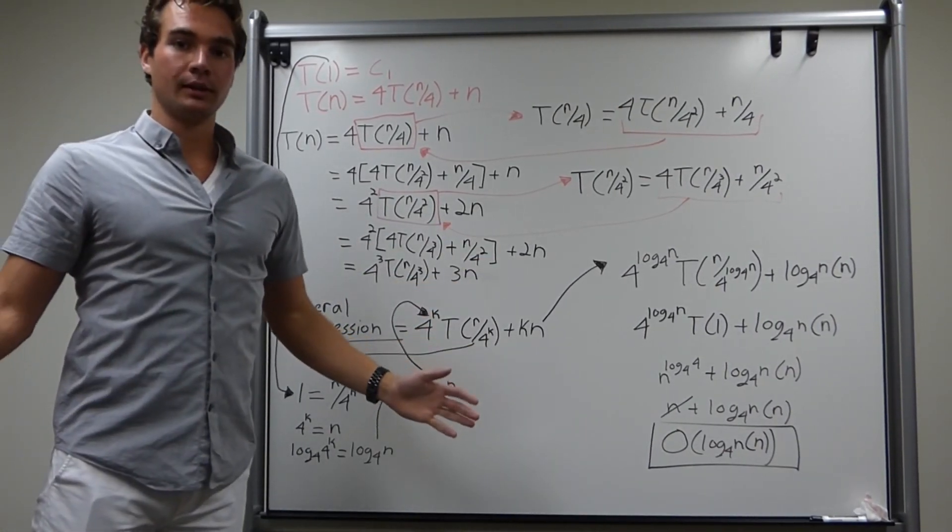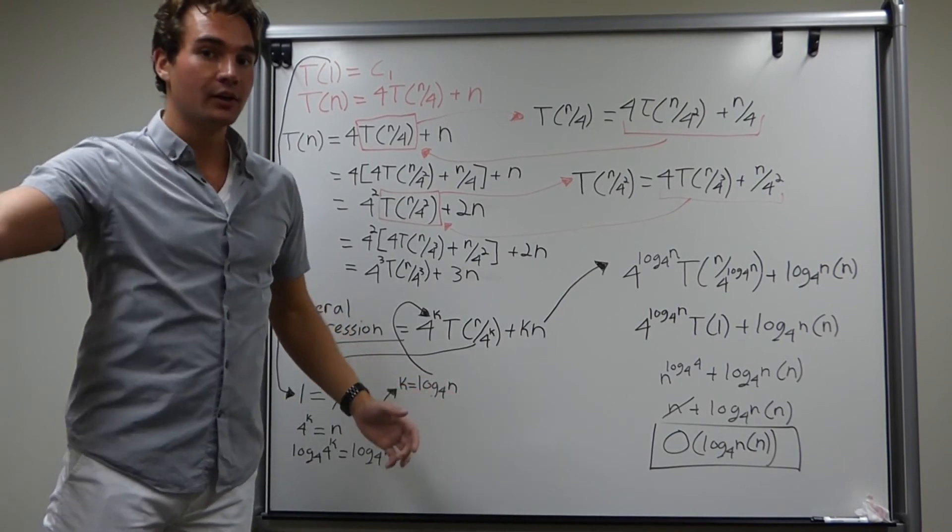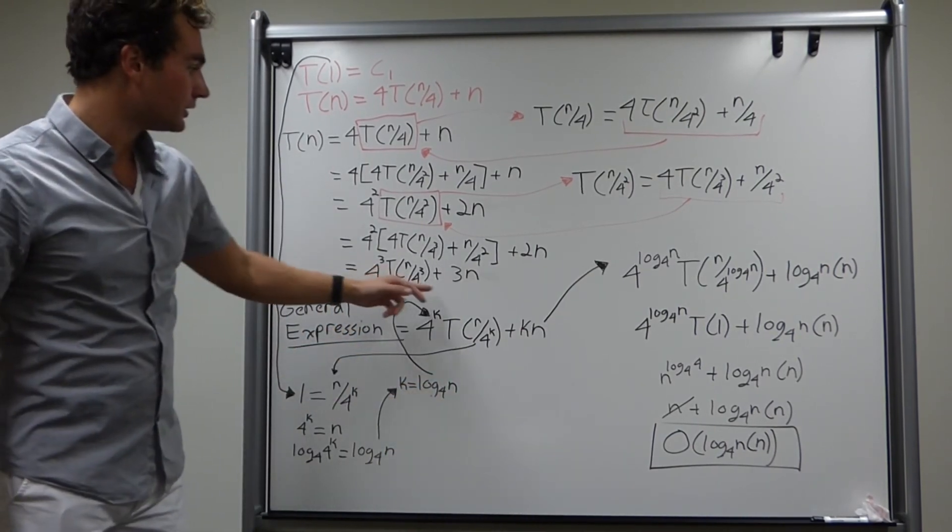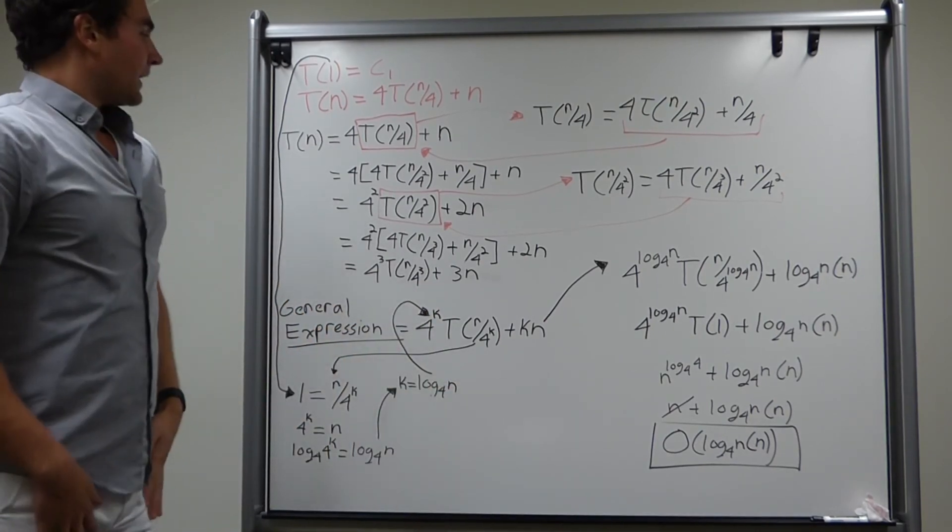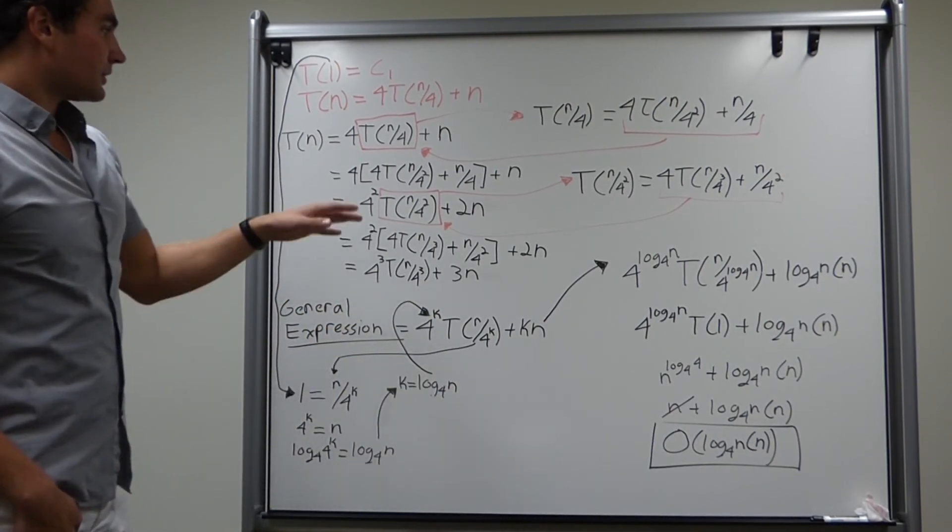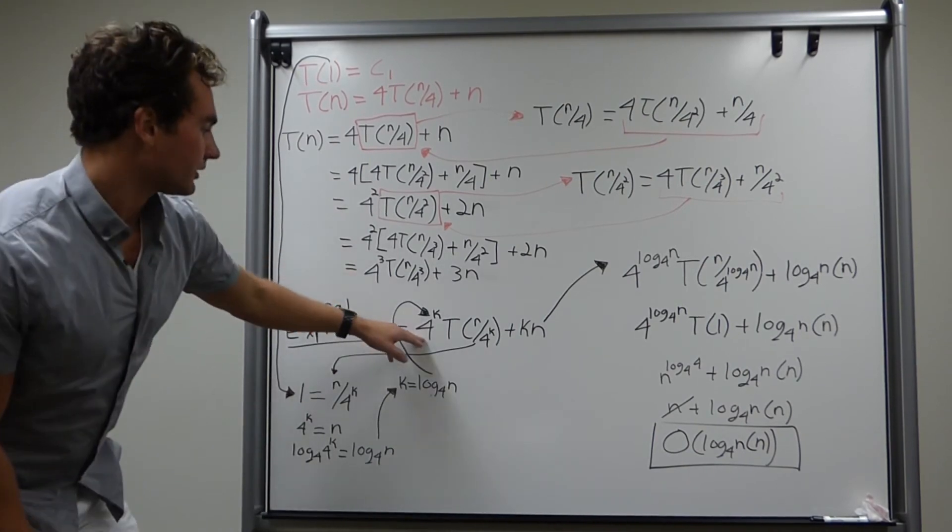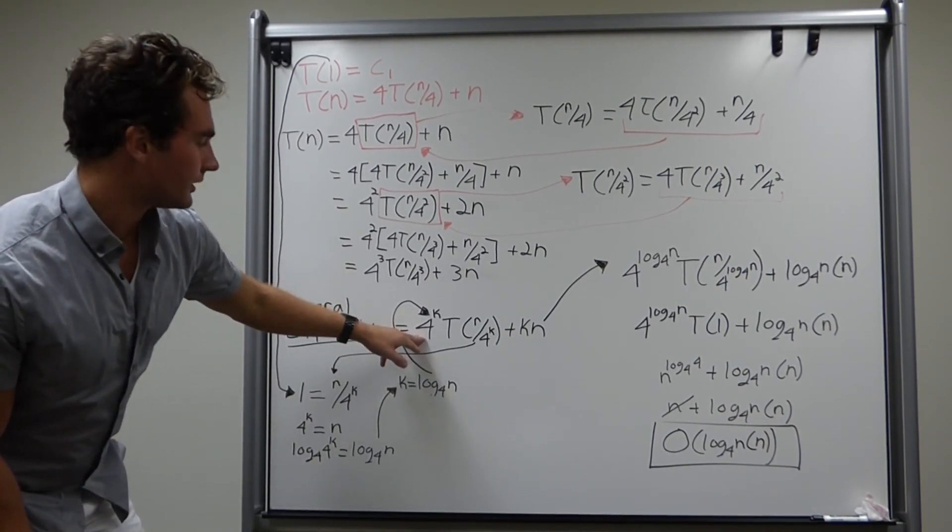At this point, your brain should be going like, dude, there's a pattern here. Look, they're all 3s. So, why don't we just replace them with some variable k, which we do. At that point in our algorithm, we're done telescoping, and we've come up with a general expression to describe the recurrence relation in terms of k.